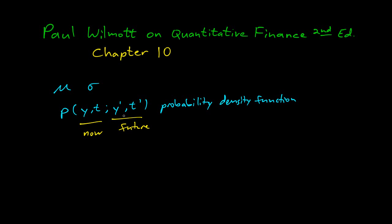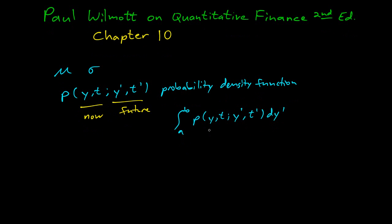This is probability density, so to get an actual probability we have to integrate. An integral from a to b of p of y,t; y prime, t prime dy prime will give us the probability that y is between a and b at time t prime given that it's at y at time t. So how do we find p?